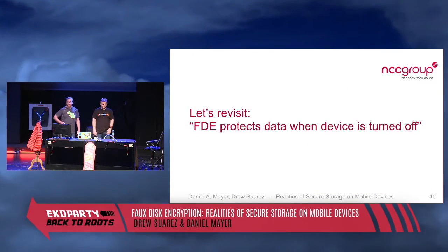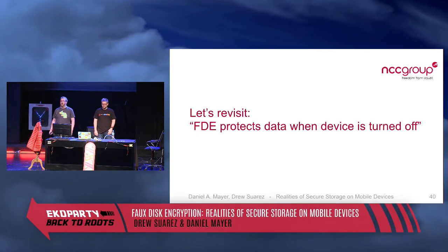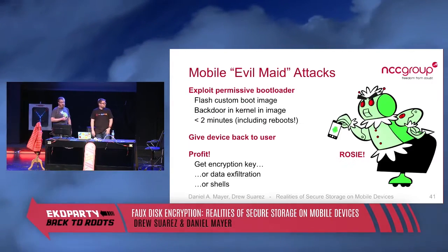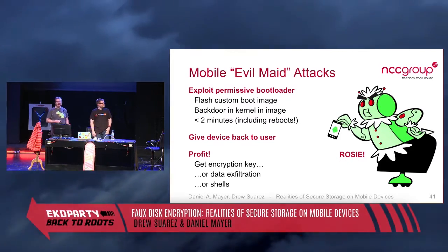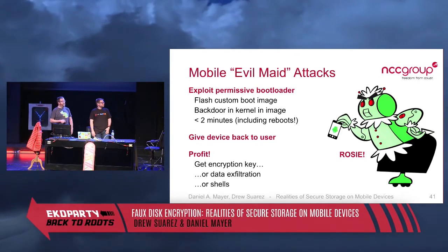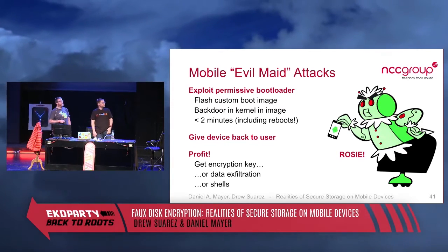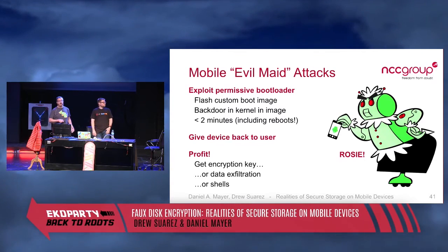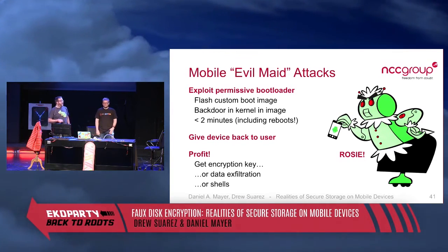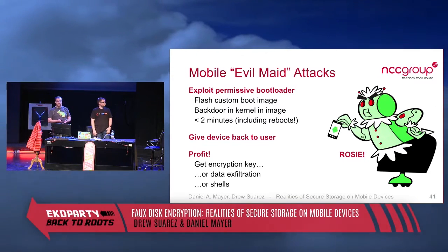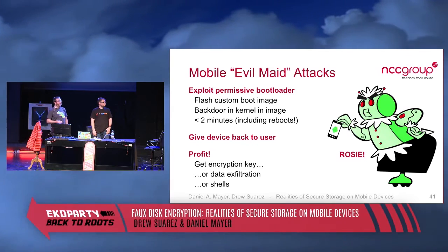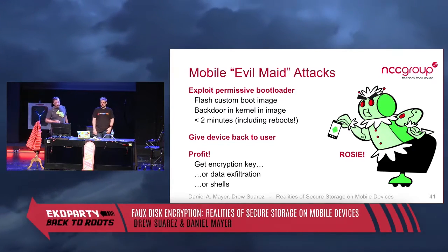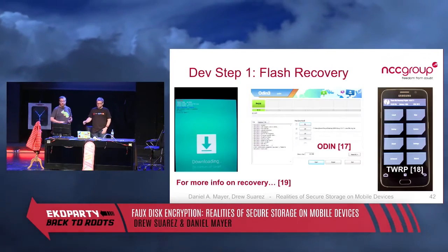Let's revisit the idea that full disk encryption protects your device when it's off — because we suggest that's not always the case. We introduce something we came up with called 'Rosie the Evil Android Evil Maid.' This exploits permissive bootloaders to flash a custom boot image with a backdoored kernel. In less than two minutes including two reboots, you have a fully persistent backdoor on the device. You give the device back to the user, let them type in their decryption key, and you can recover the encryption key itself, exfiltrate data, get shells — anything you want.